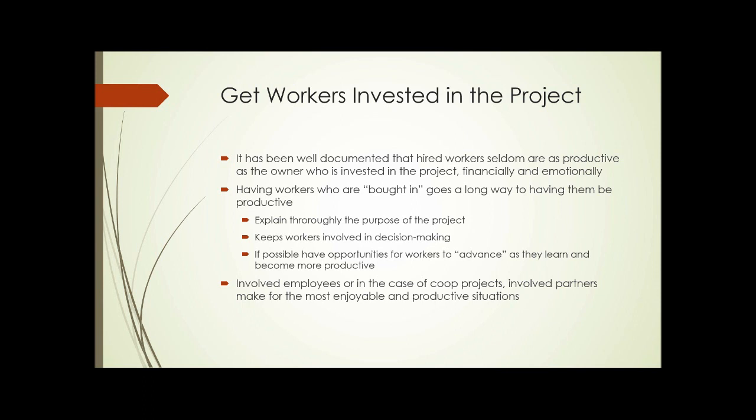How do you do that? There are three main ways. One: the employees should know what's going on. Explain what the purpose of the project is. If it's to make money in urban agriculture, they need to know that — you need to make money with this project. If it's to provide an educational opportunity, they need to know that. The workers need to know exactly what's going on; therefore, it's easier to explain exactly what's expected of them.